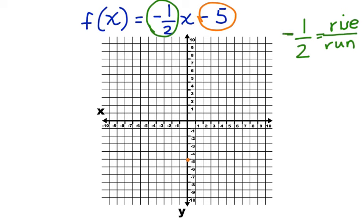So our rise is a negative 1, so we're going to go down 1. And our run is 2: 1, 2. There's our point. Now let's graph the line. Here's the graph of the line.